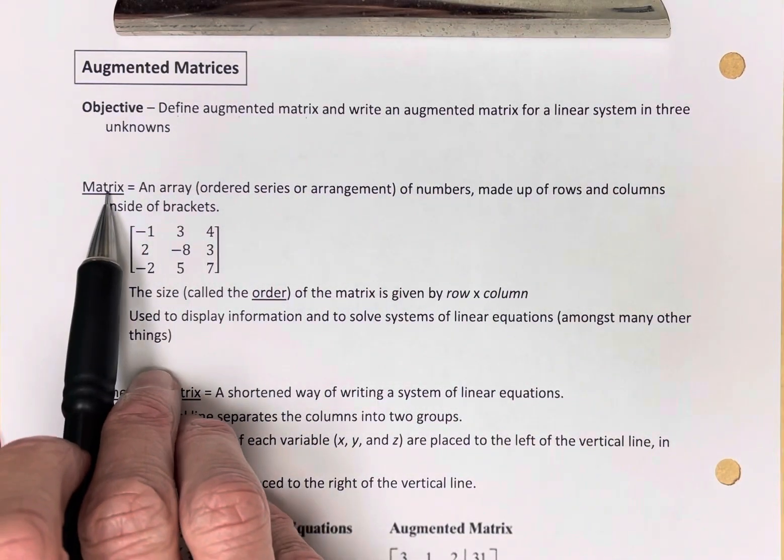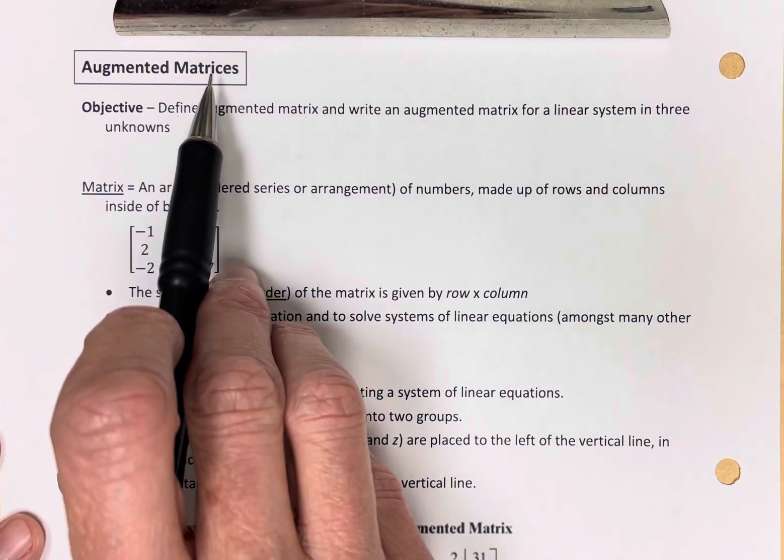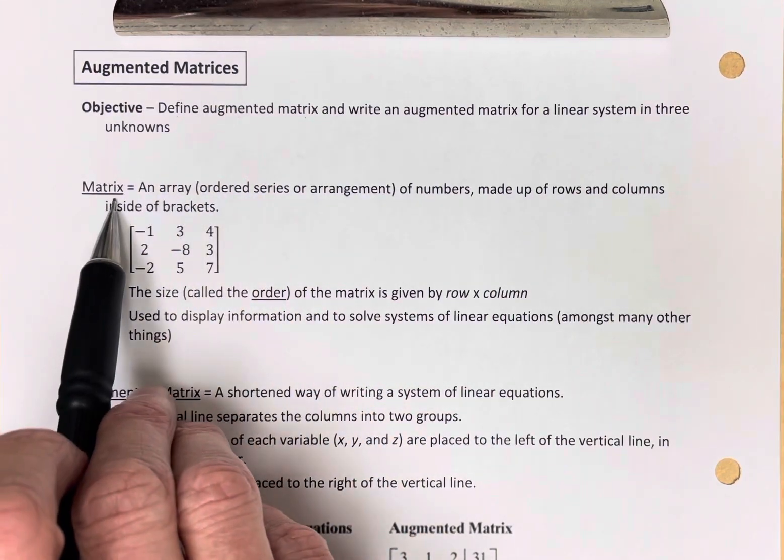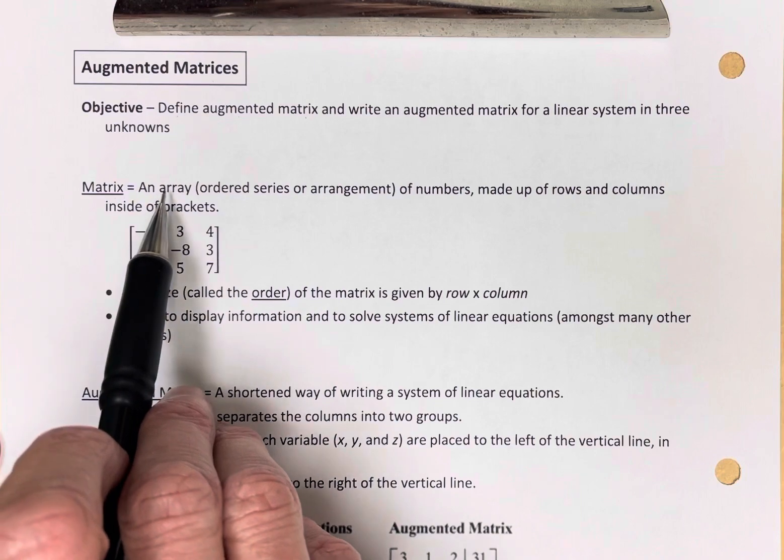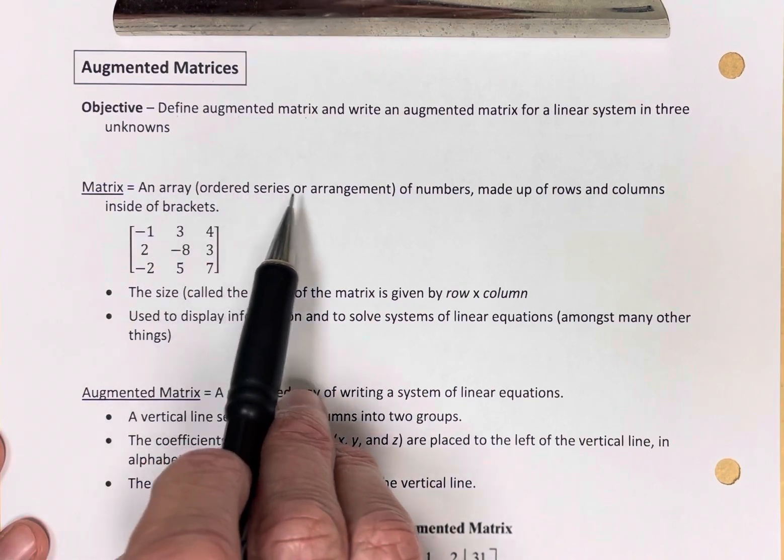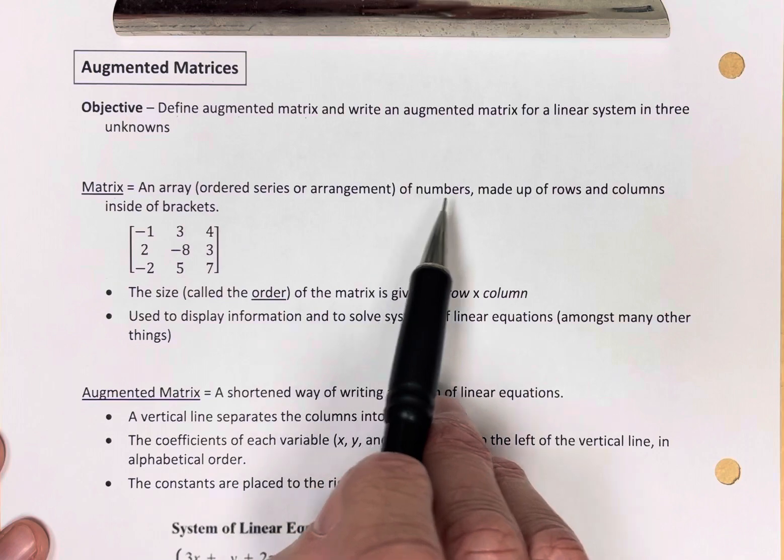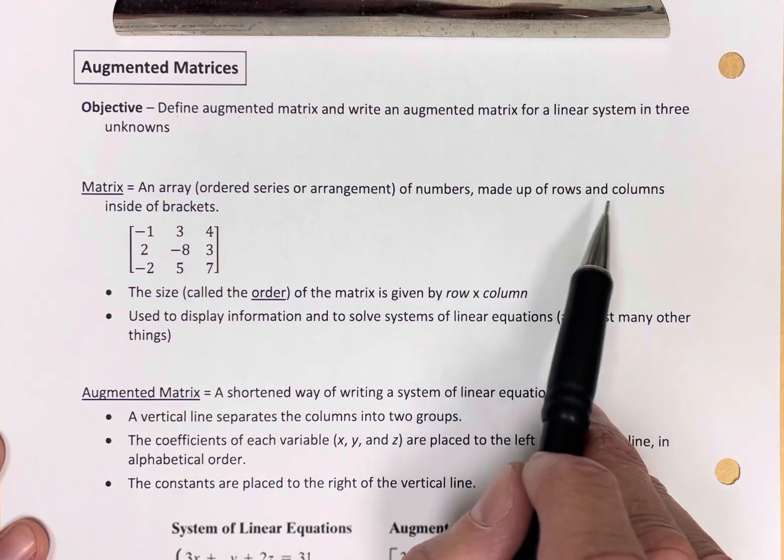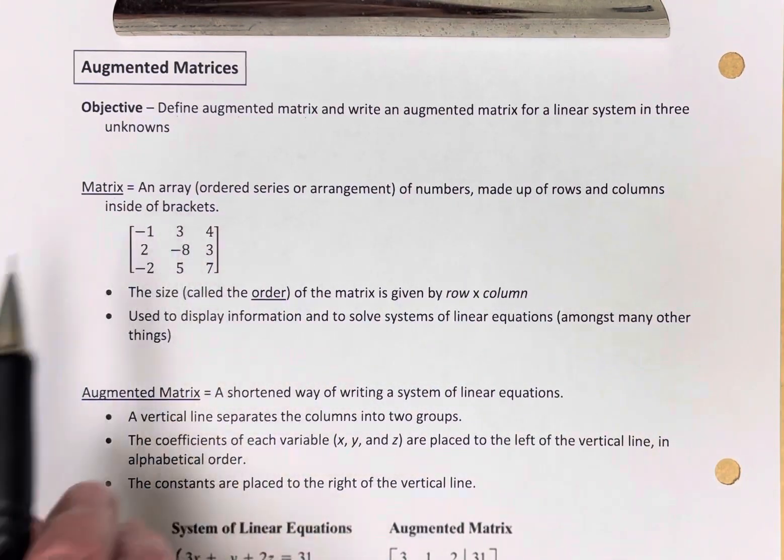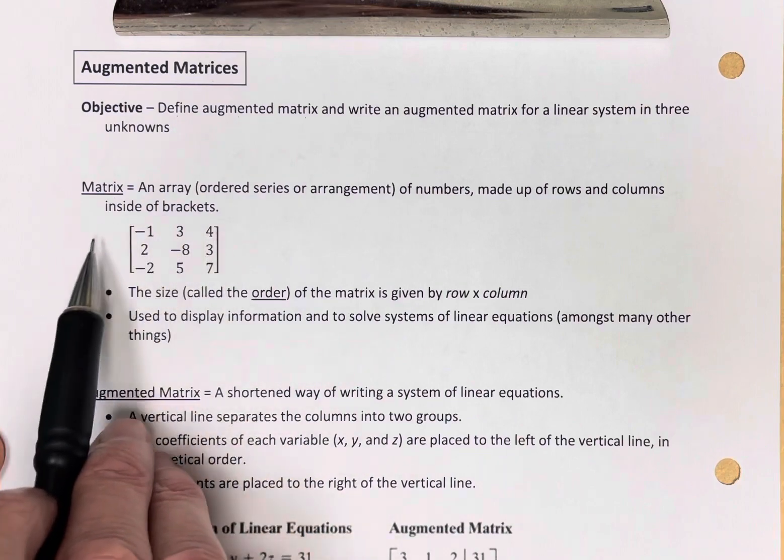What's a matrix? The word matrices is the plural form of the word matrix. A matrix is an array, which is an ordered series or arrangement of numbers made up of rows and columns inside of brackets.